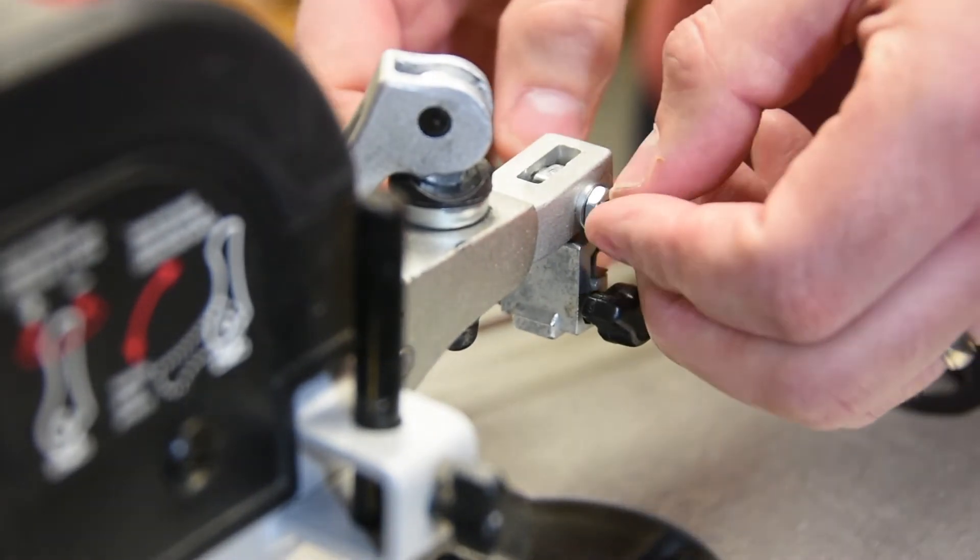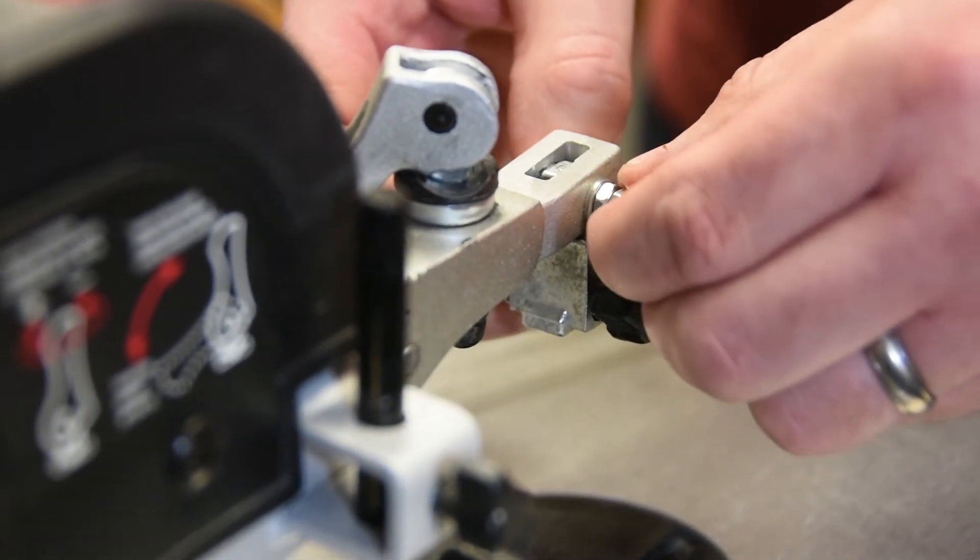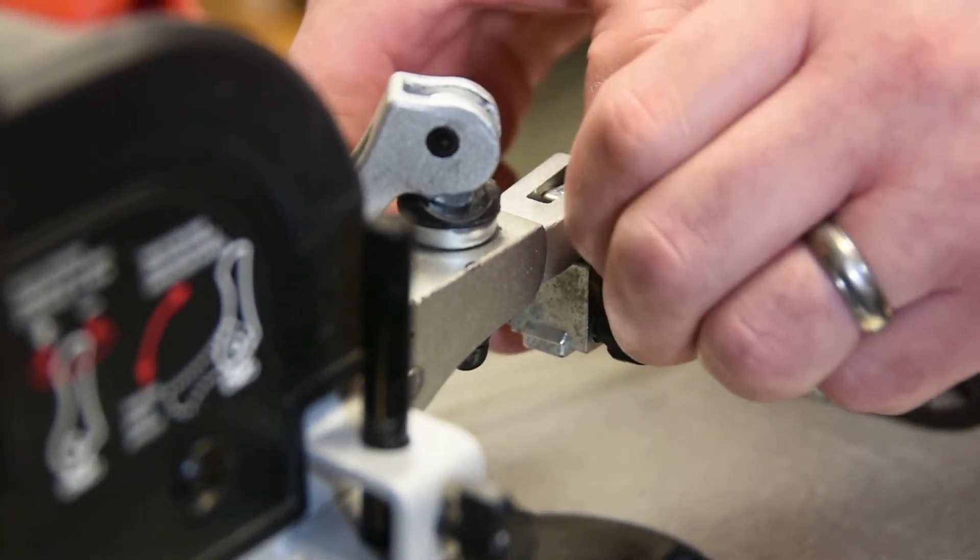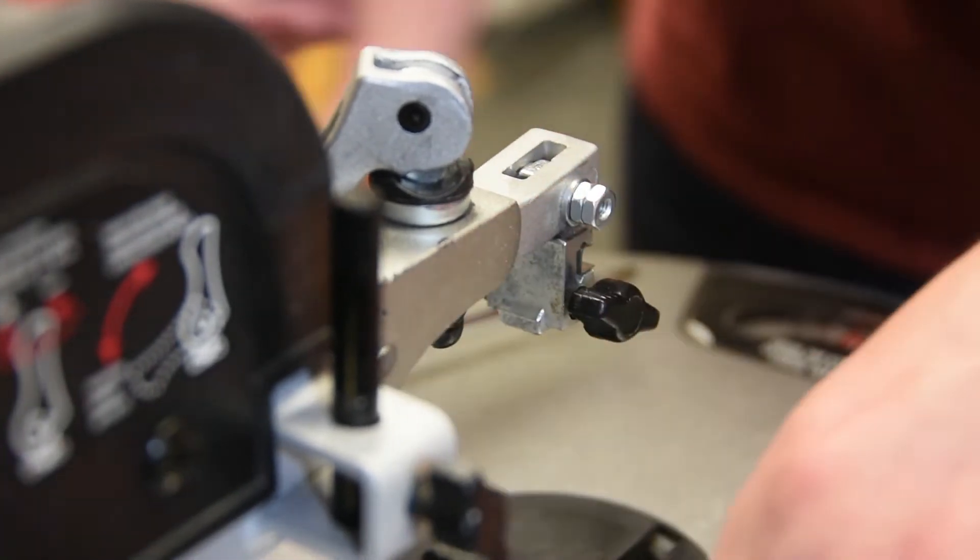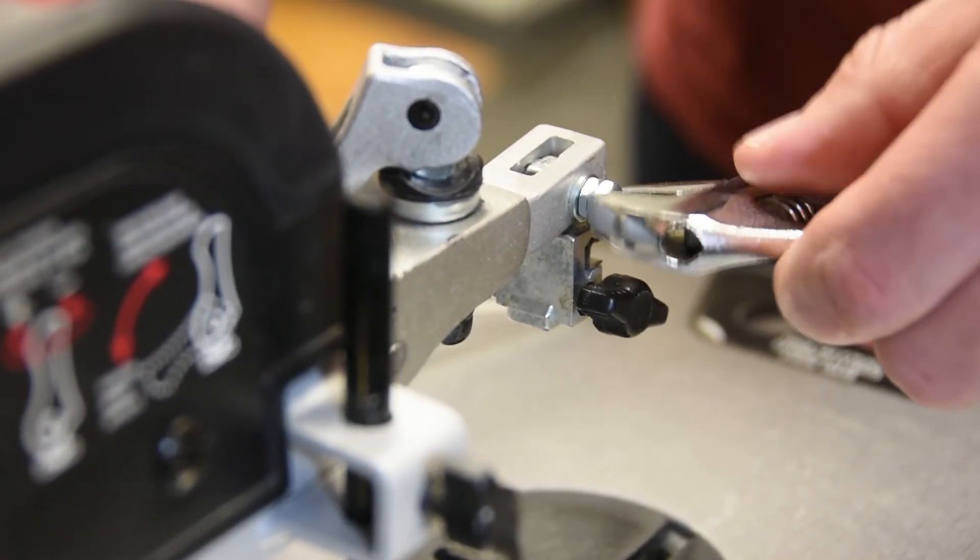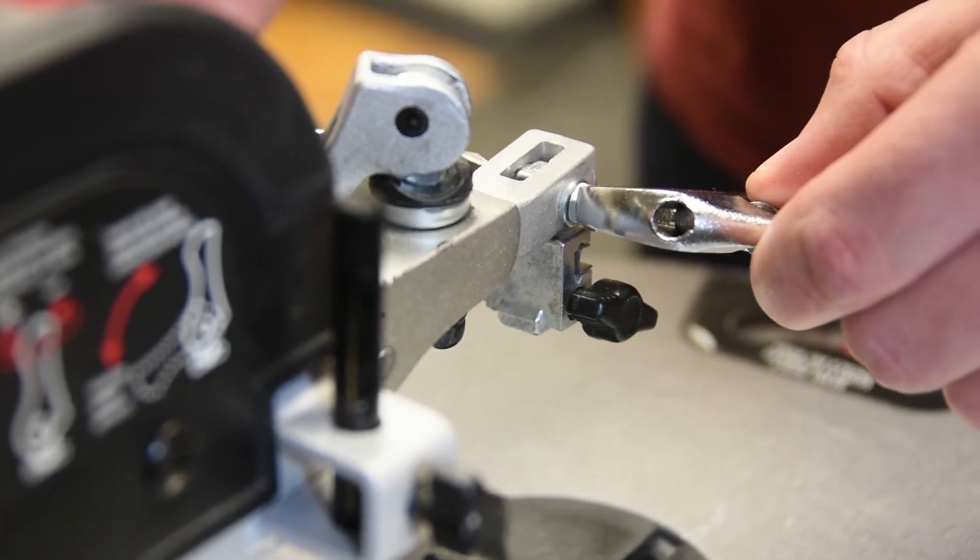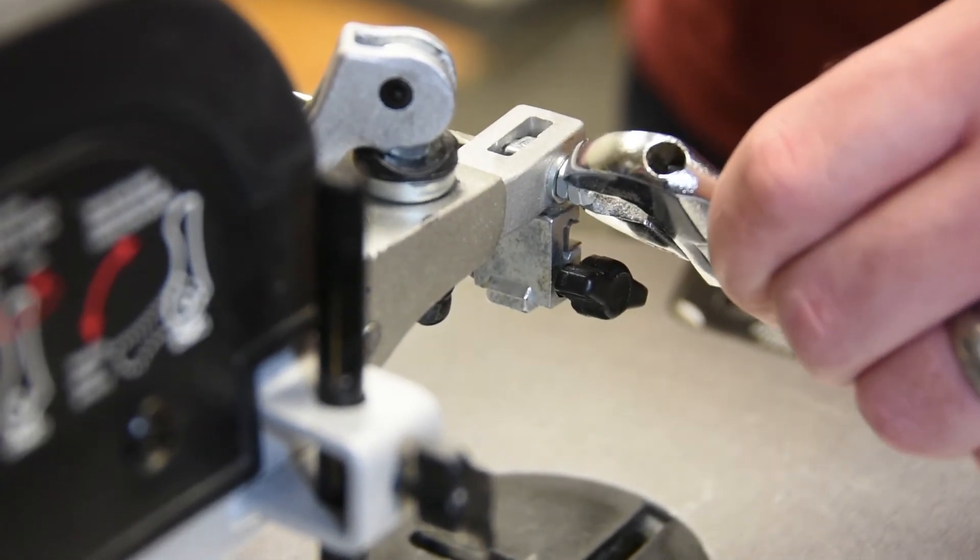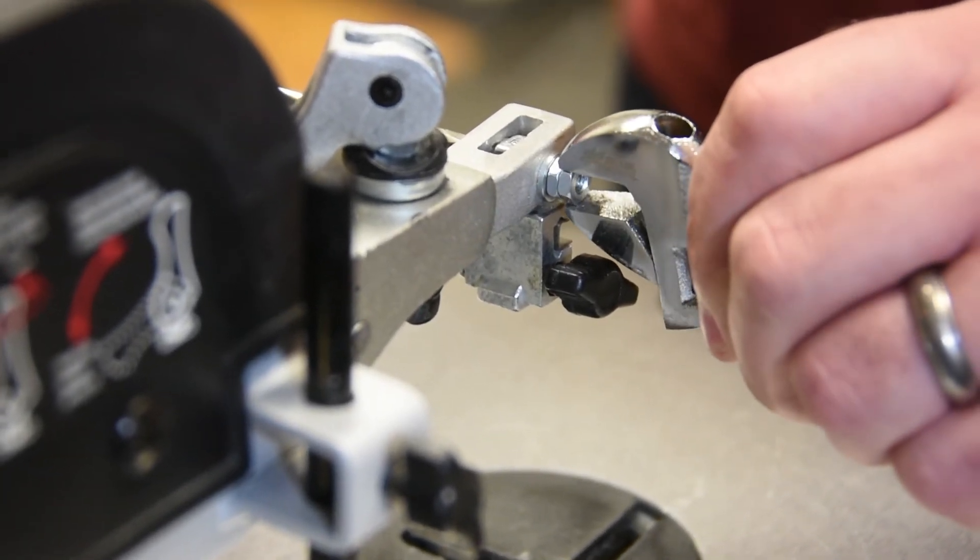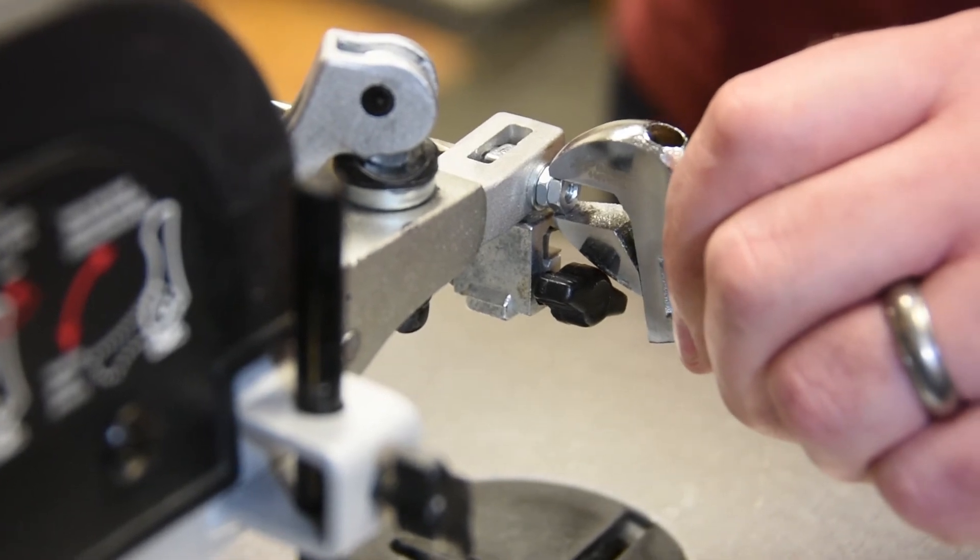Then since I had extra nuts, I just add another nut to the end and tighten the one nut down against the other one to lock everything in place. This piece does see a lot of vibrations, so it's foreseeable that you could loosen this all up if you didn't do something to keep it in place.